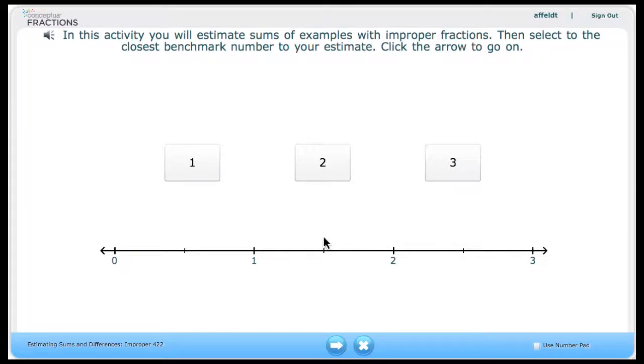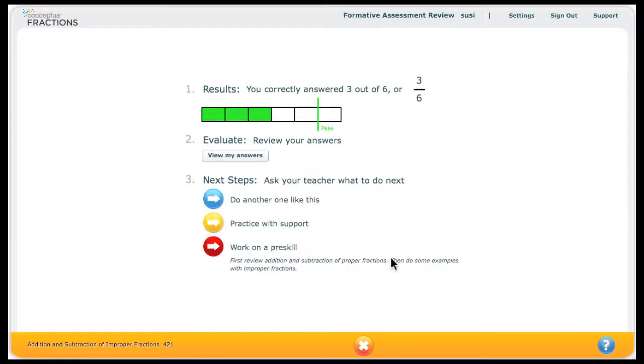Now let's take a look at the formative assessment for a student who has not passed. Here is the formative assessment review screen. In the results section, you will notice that it indicates that the student received 3 out of 6 correct and has a fraction bar model showing that the student has not reached the pass line.